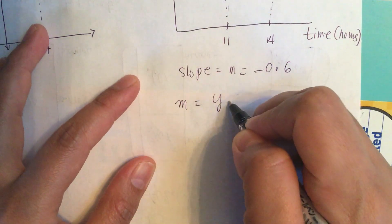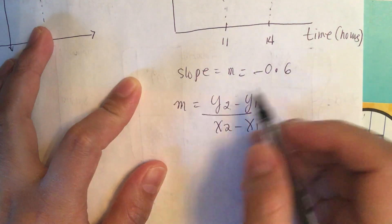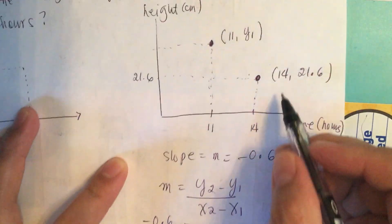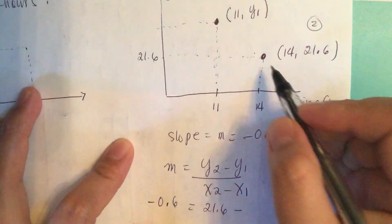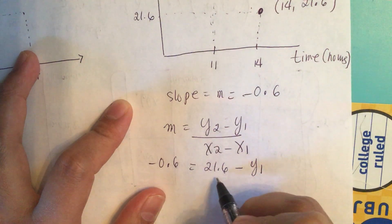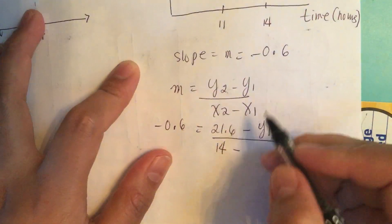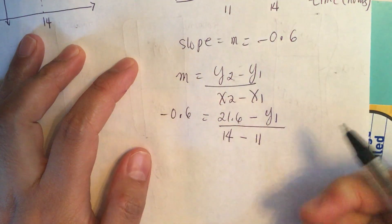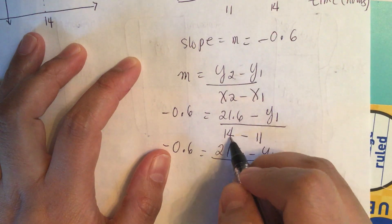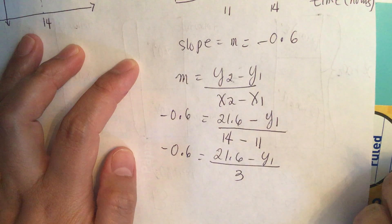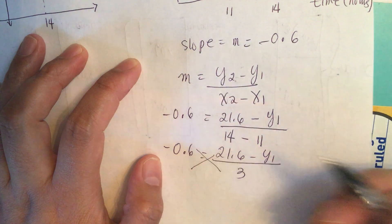Using the slope formula m = (y2 - y1) / (x2 - x1), we substitute the known values: negative 0.6 equals (21.6 - y1) divided by (14 - 11), which simplifies to (21.6 - y1) divided by 3.